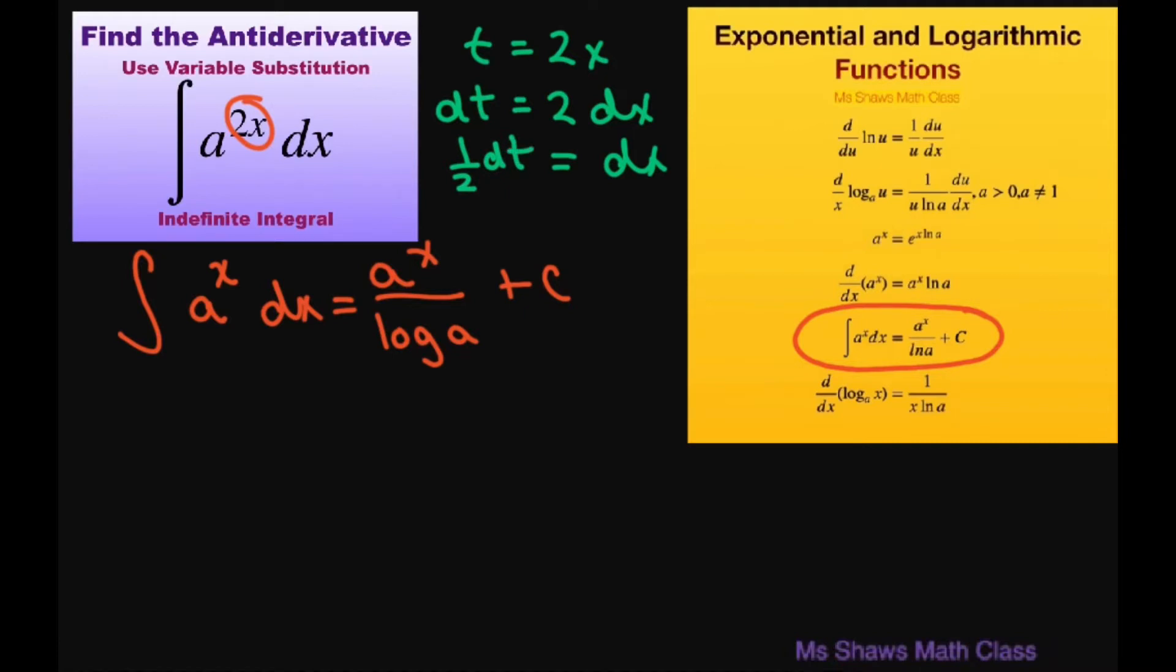So using substitution we're going to get for our problem the integral of a to the power of t dt. But our dx here is 1 half, so I had to put a 1 half in front. Now let's substitute back in our t and use this formula. So this is going to equal a to the power of t divided by log of a plus c, and we still have this 1 half, so I'm going to put the 2 in front there.